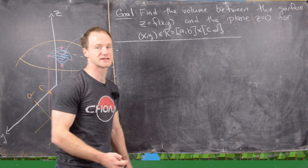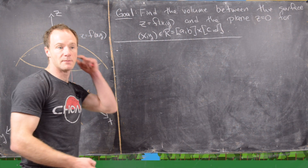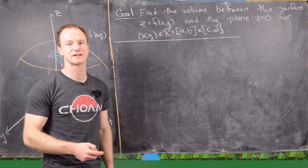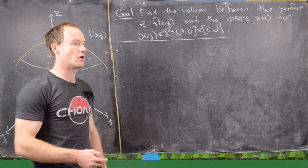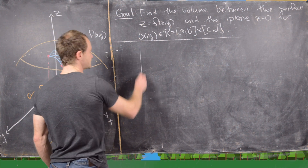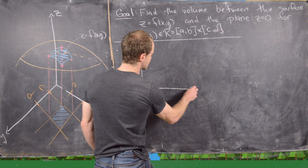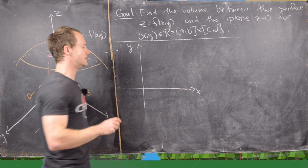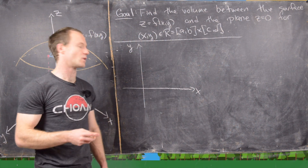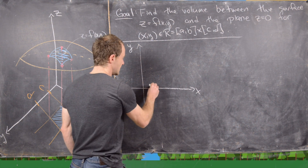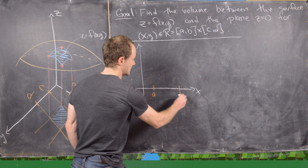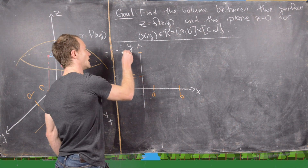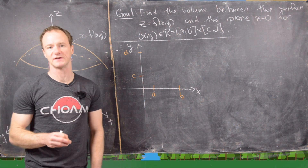We're going to approach this like we did in Calculus 1, by setting up a limit of a Riemann sum. In this case the Riemann sum will be over a rectangle instead of just over an interval. The domain of this function is two-dimensional, so the domain will be in the xy-plane, and I'll think about the rectangle [a, b] cross [c, d] placed in the first quadrant, though it could obviously be anywhere.